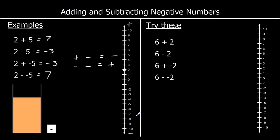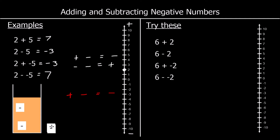I'm also going to show this with an orange drink. If I add ice cubes into the drink, and each ice cube is a negative, then adding these negatives makes the temperature decrease. And if I take a negative out — take away a negative — the temperature will increase. So: adding a negative number is the same as taking away, and subtracting a negative number is the same as adding.